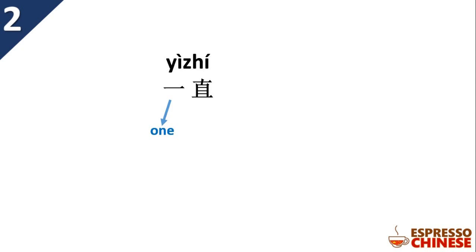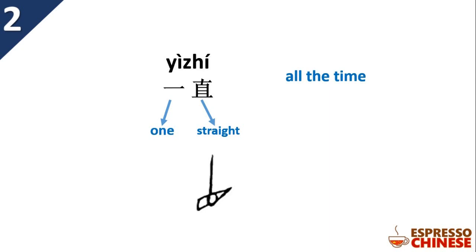一直. 一 means 'one', 直 means 'straight'. Look at the old character — you find an eye and a vertical line, so it's like a person looking at something in a straight line. That gives it the meaning 'straight'. Together, 一直 means 'all the time', or you keep doing something.